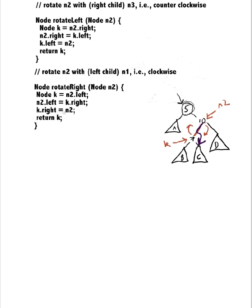And my K's right now needs to have the same value as N2, so here's K's right right here. This needs to be having the same value as N2, so it needs to point right there, and then I return K.